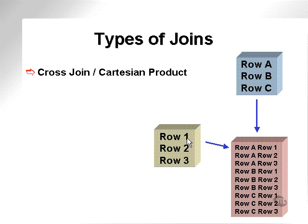you can see I have three rows here: row 1, 2, and 3. The second set shows me row A, B, and C. The resulting set will be row A with 1, 2, and 3,